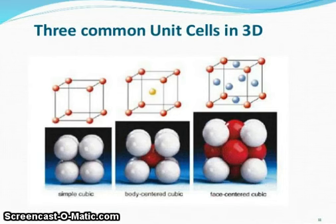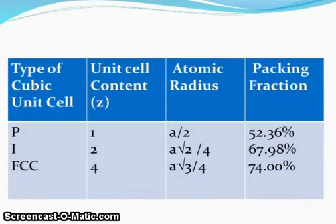Three common unit cells in 3D: simple cubic SC, BCC, and FCC. Types of cubic cell: unit cell content represented by Z, atomic radius, and packing fractions. P: unit cell content 1, atomic radius A by 2, packing fraction 52.36%. I: unit cell content 2, A root 2 divided by 4, 67.98% packing fraction. FCC: unit cell content 4, atomic radius A root 3 divided by 4, 74.00%.